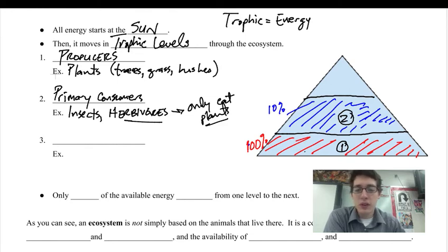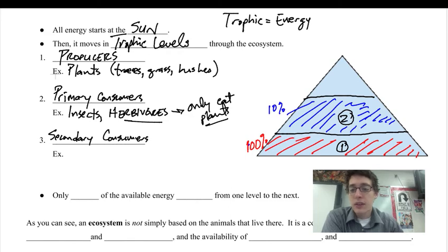So we've got the producers down here at the bottom, primary consumers, and then after the primary consumers are the secondary consumers. And these are omnivores and carnivores.